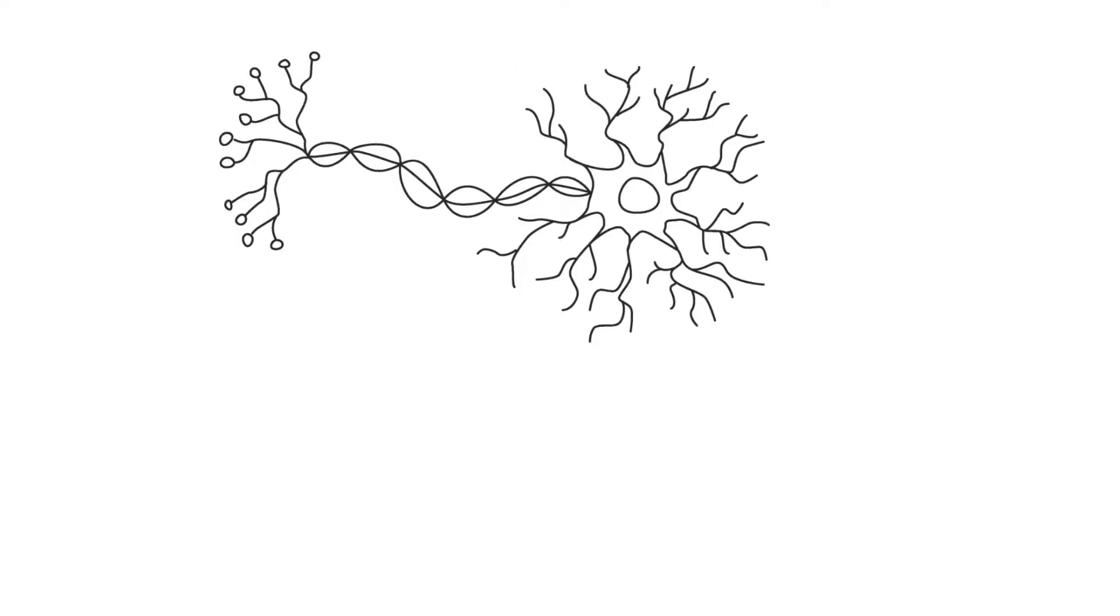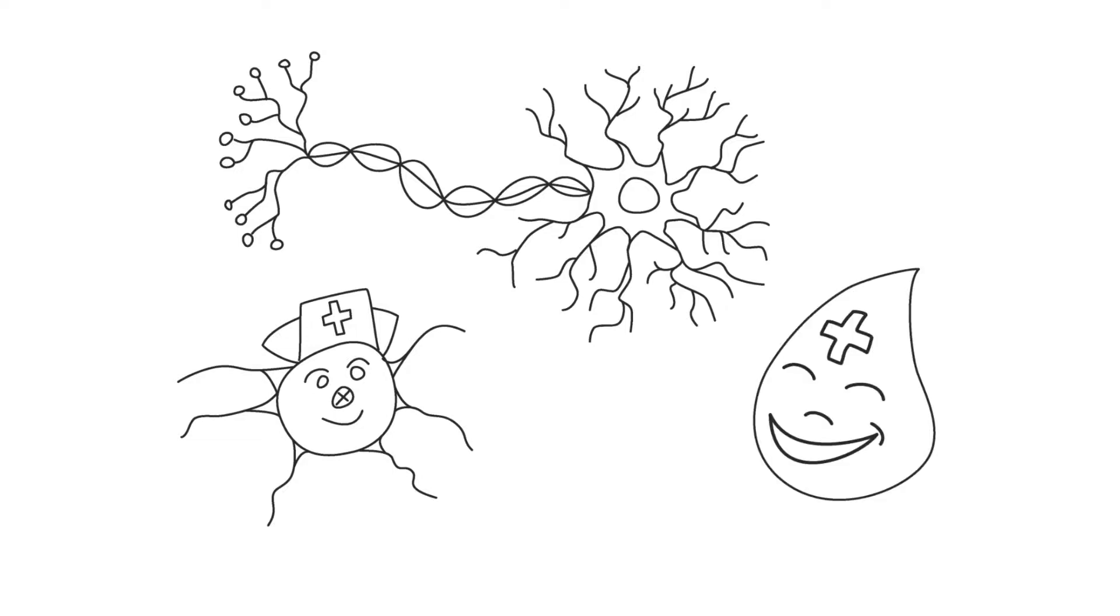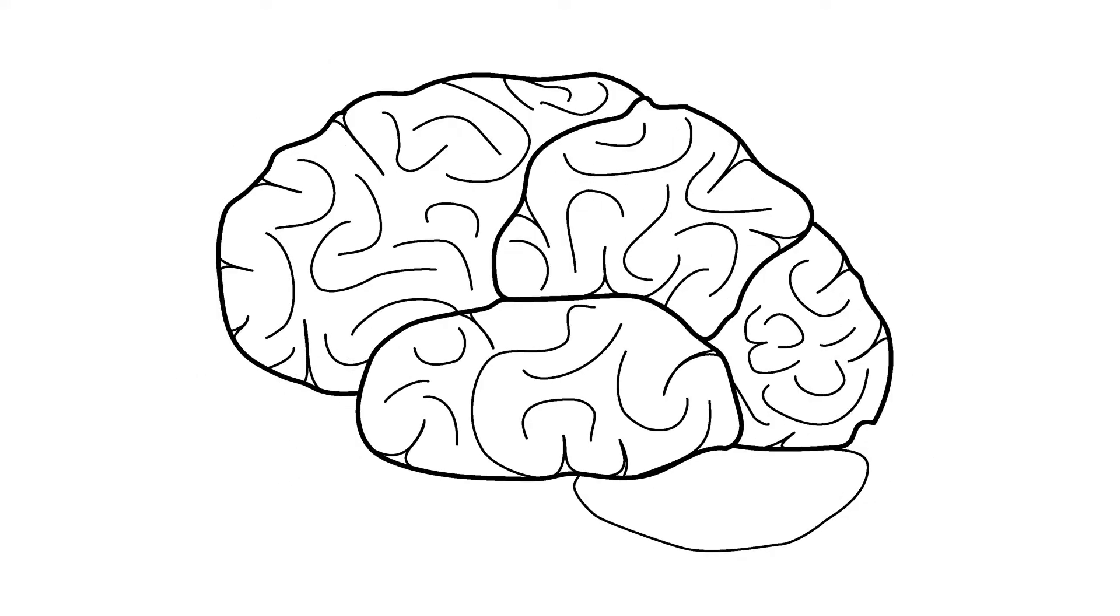Neurons, the cells in the brain that send and receive messages. Glial, the cells that support and protect neurons, and capillaries that provide blood supply, together make up the gray matter of the brain.